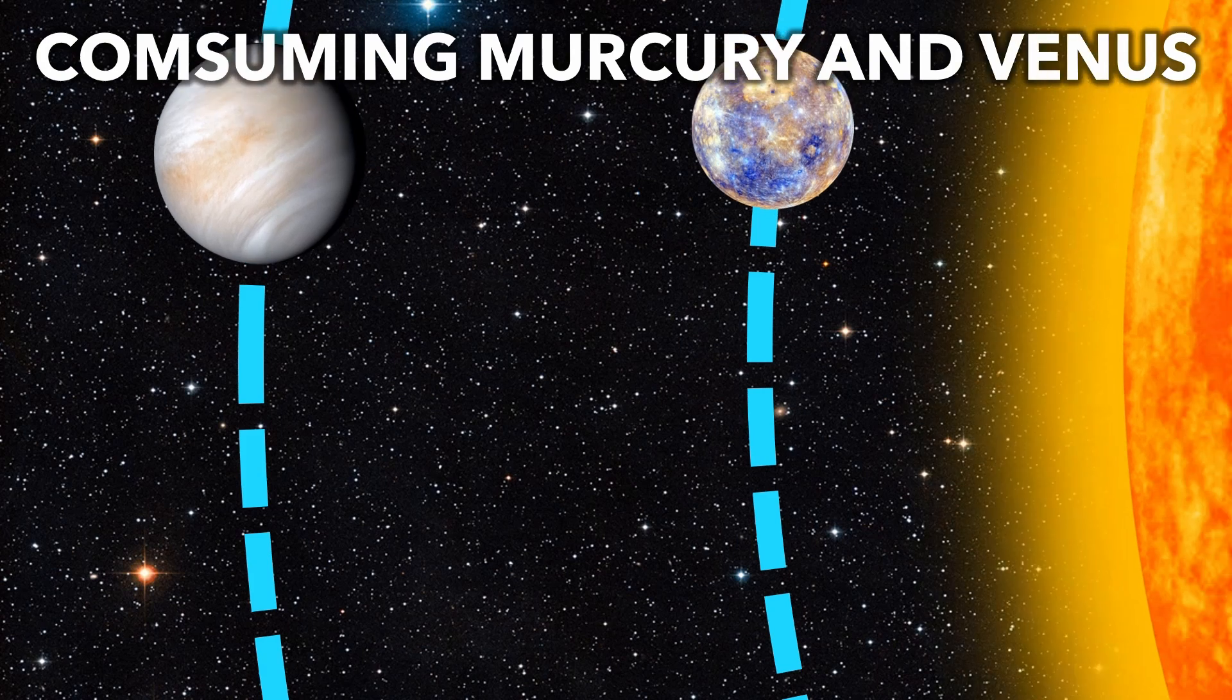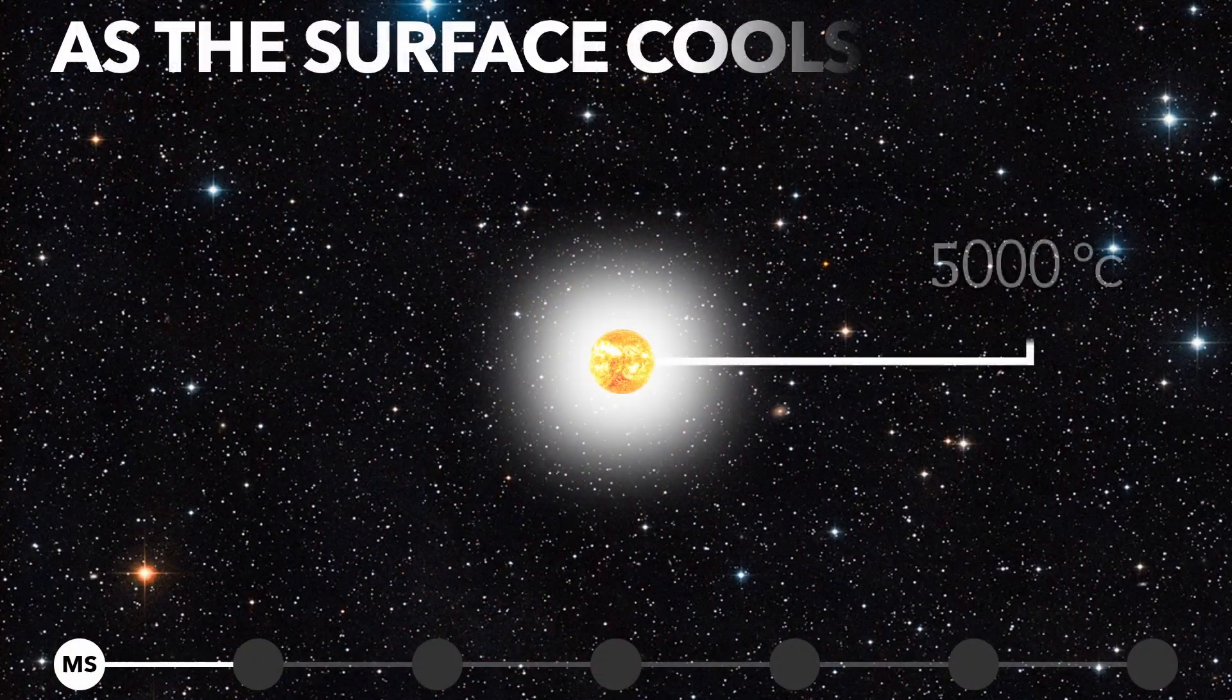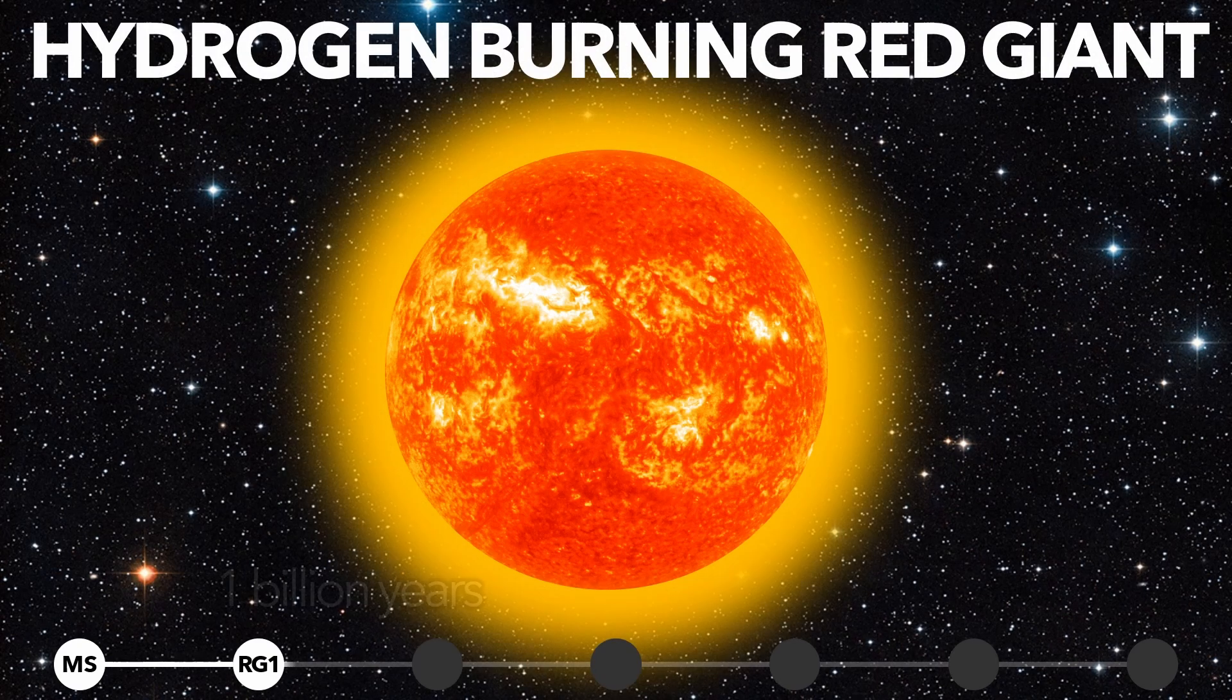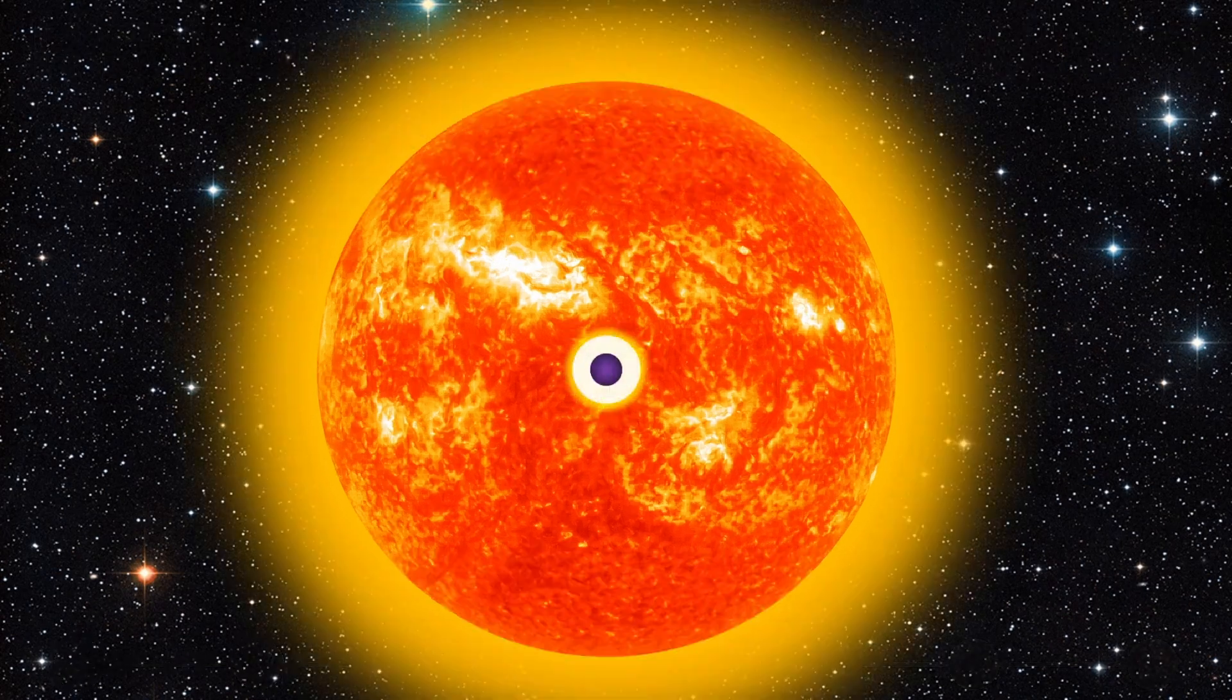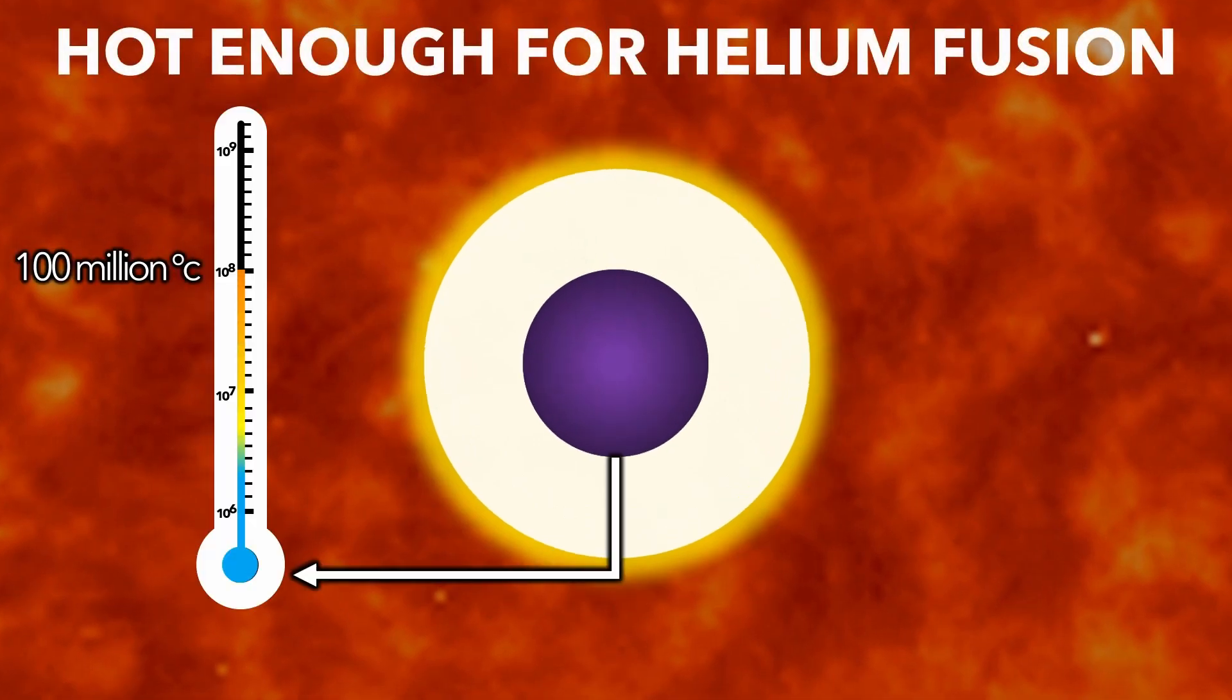If the sun were this size, even Mercury and Venus would be consumed. As the star expands, the surface cools and turns redder. The first red giant phase lasts a billion years. But eventually, the core gets hot enough to fuse helium into carbon. Suddenly,